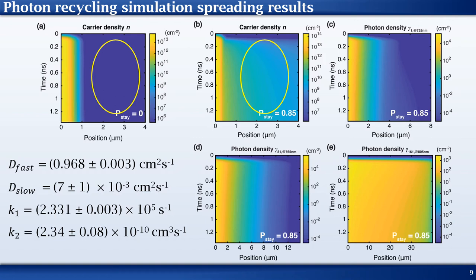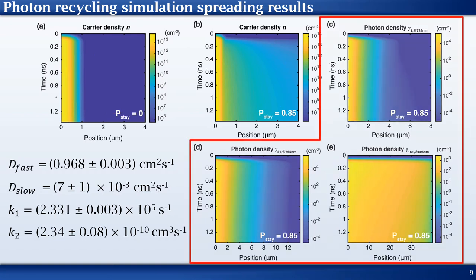Although carriers spread further in space due to photon recycling, the edge contribution to the densities is nearly 5 orders of magnitude lower than the values at center. Panels C, D, and E show the photon spatiotemporal distribution for three different wavelengths. Photons at longer wavelengths spread rapidly due to the smaller absorption coefficient or equivalently higher diffusion coefficient D_lambda. These longer wavelength photons are the main contributors to the carrier densities far away from the spot.